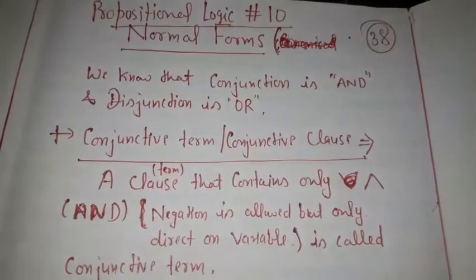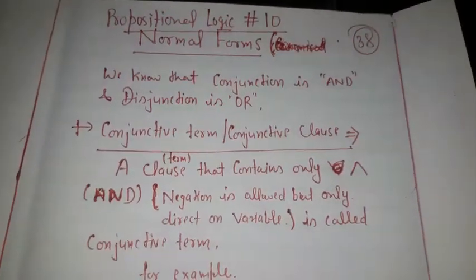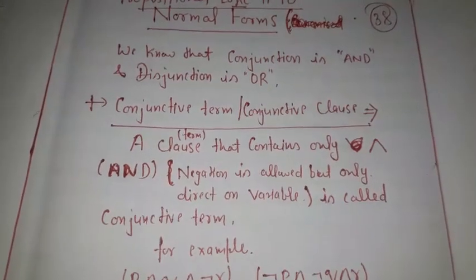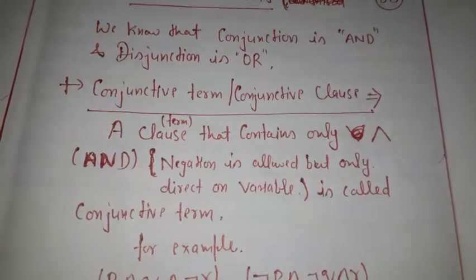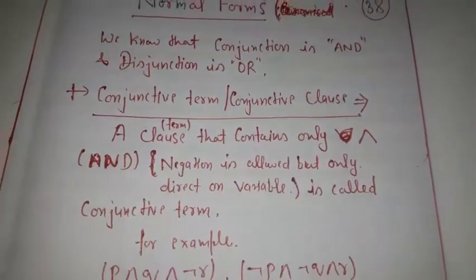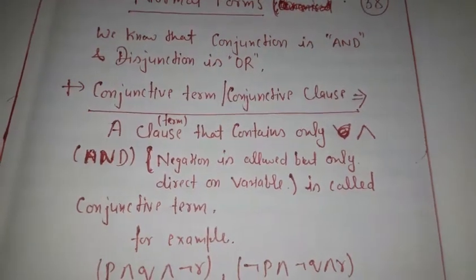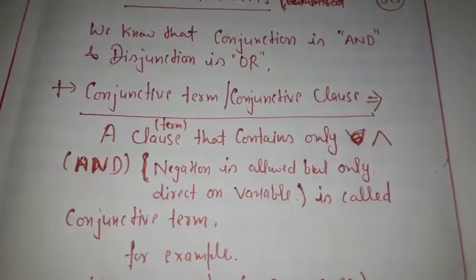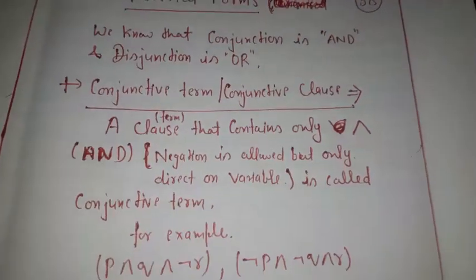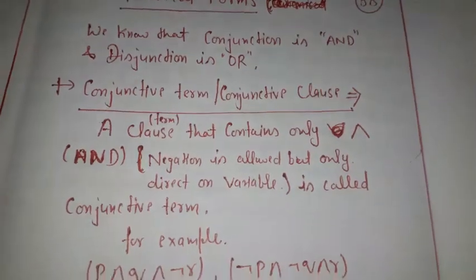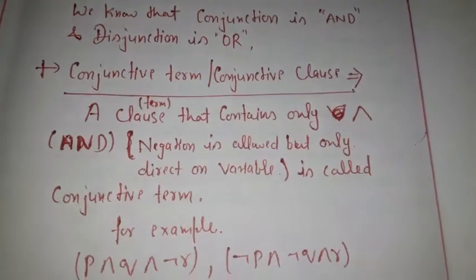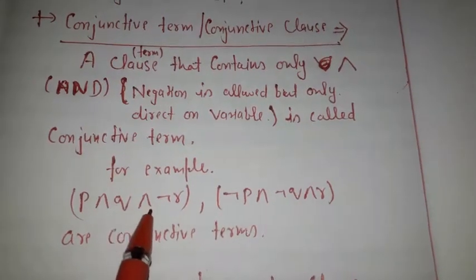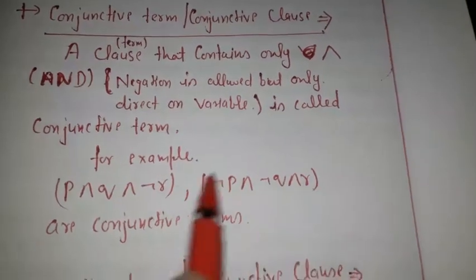There are two terms in a propositional logic expression. The first term is the conjunctive term — a term that contains only the AND operation, that is the conjunction operation. Negation is allowed but only directly on the variable. Such as the conjunctive terms of three variables: p∧q, p∧¬r, ¬p∧¬q∧r — these are called conjunctive terms.